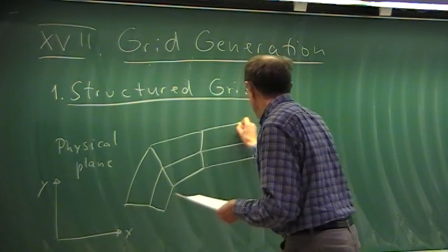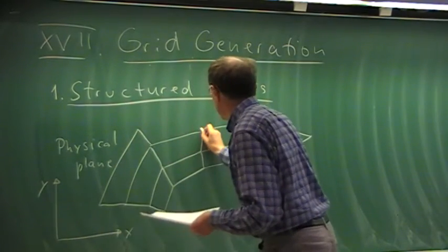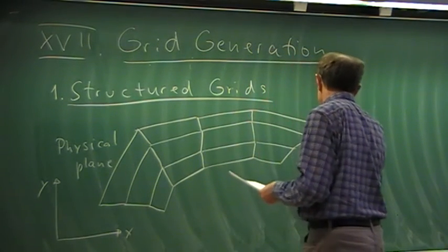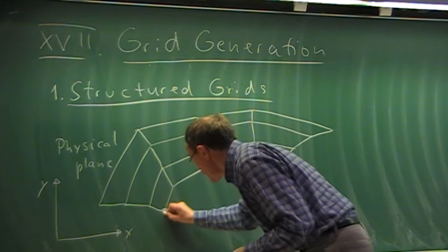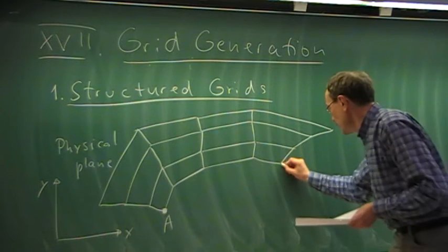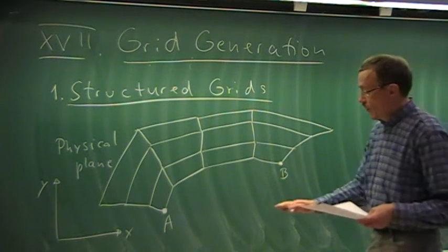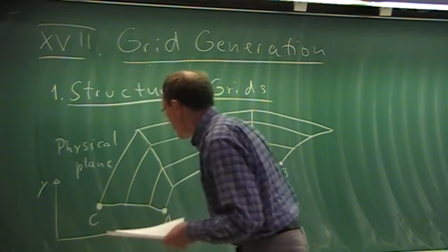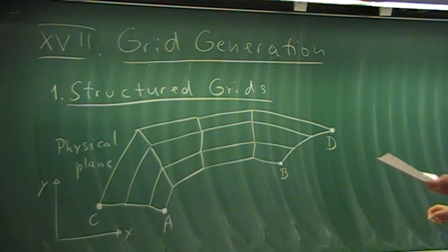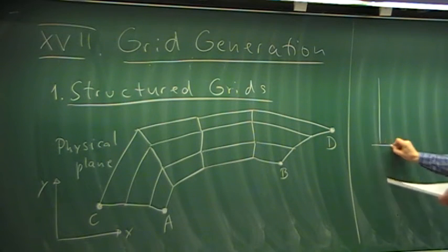We have quadrilaterals in the physical plane. We mark a few reference points: A and B on the aircraft surface in the canopy region, going out nearly normal, and then points C and D on an outer boundary — essentially a far-field boundary. We can then imagine a transformation to the computational plane.